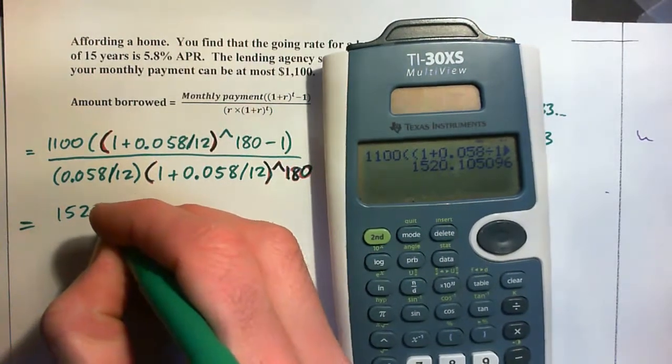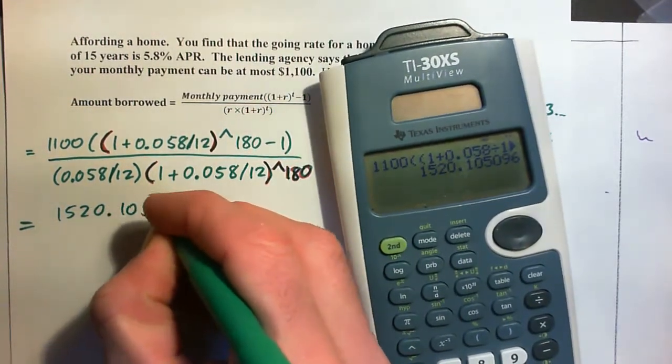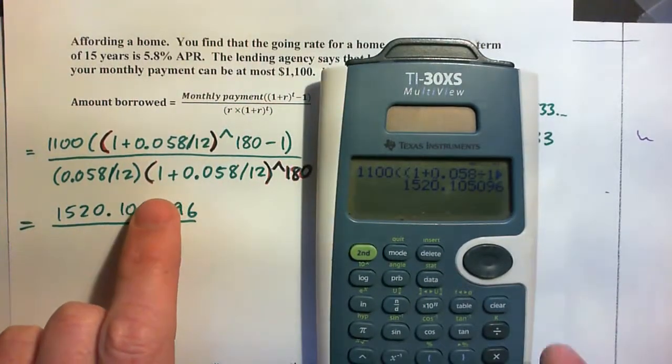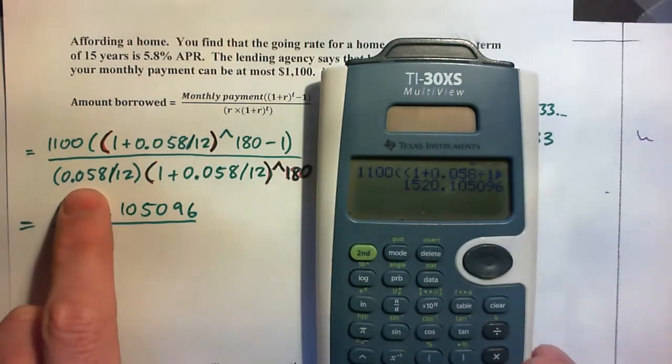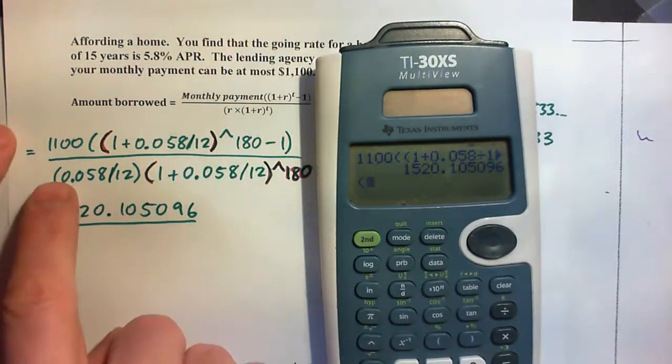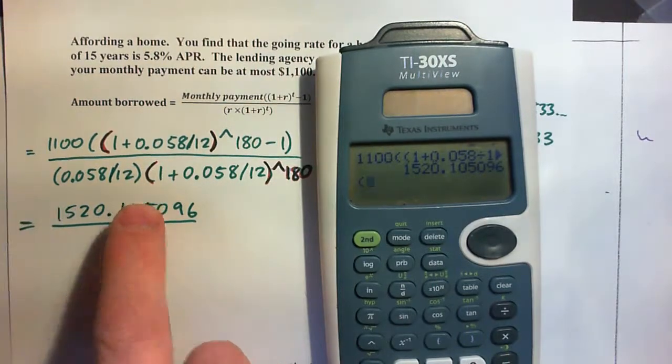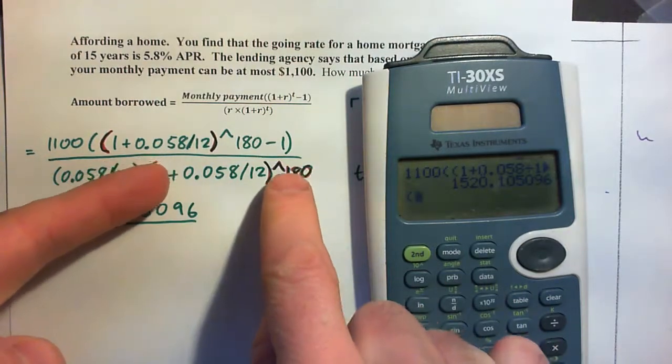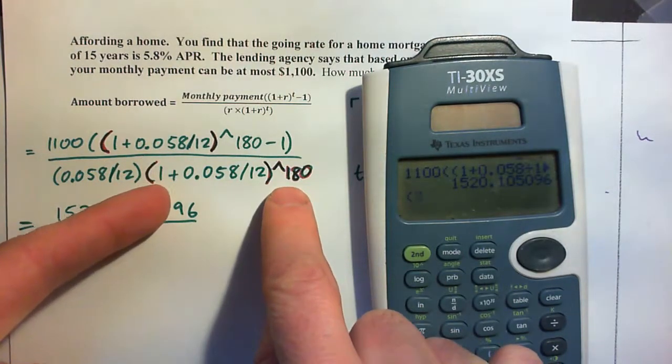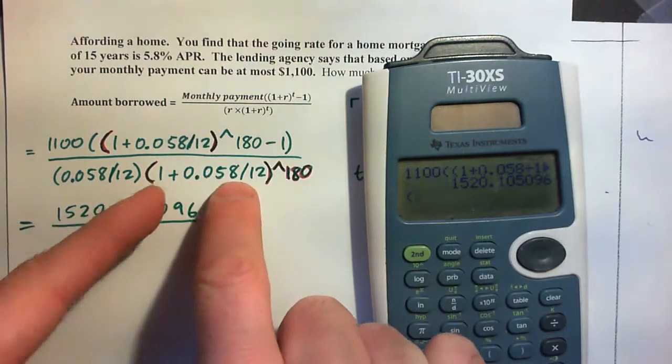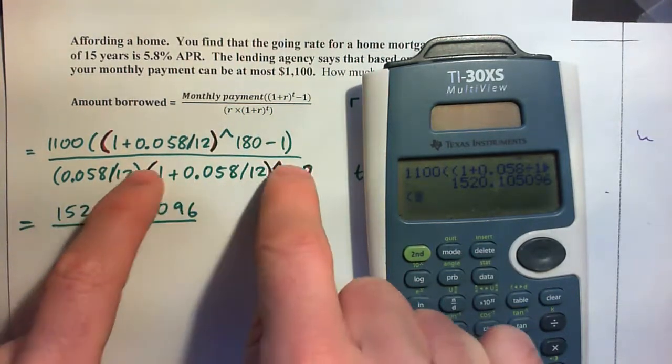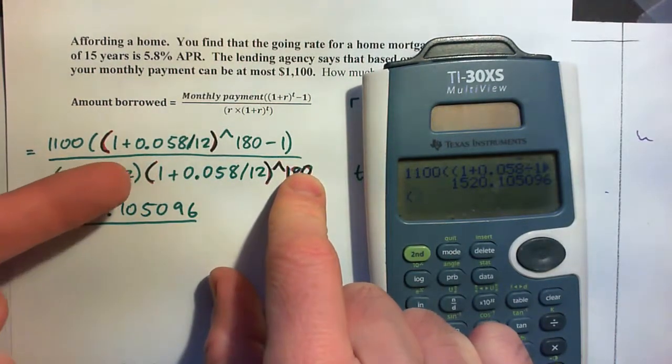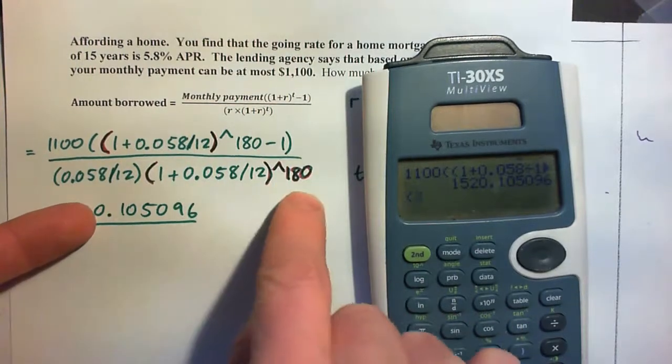1520.105096 all over and now we'll do the bottom. So the bottom is parenthesis. Now the reason I have parenthesis, I actually don't need these parenthesis because the calculator goes from left to right. And it will see that this is an exponent. It will calculate everything in here. It will divide that first, then add the one, then exponent that, and then it will go from left to right and see that it needs to go here.